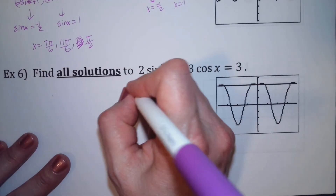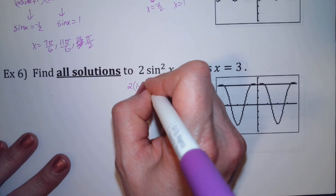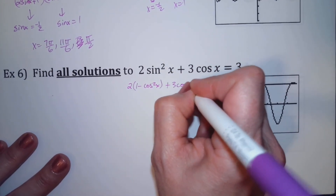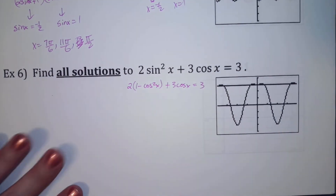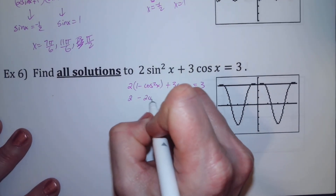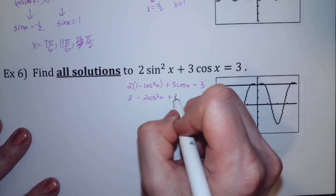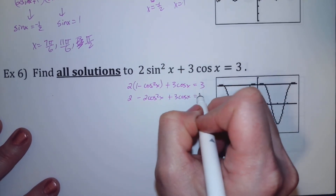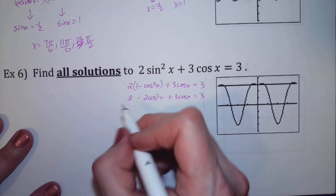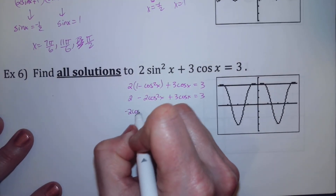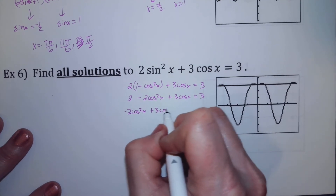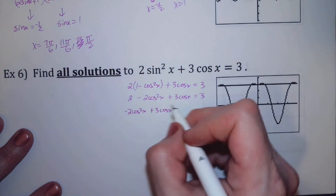So let's make that transformation. I got 2(1 minus cosine squared) plus 3 cosine equals 3. I've got to do a little work on this — distributing gives 2 minus 2 cosine squared plus 3 cosine x equals 3. This is a quadratic, so I want to put it in order: negative 2 cosine squared plus 3 cosine x, and taking away 3 leaves negative 1.